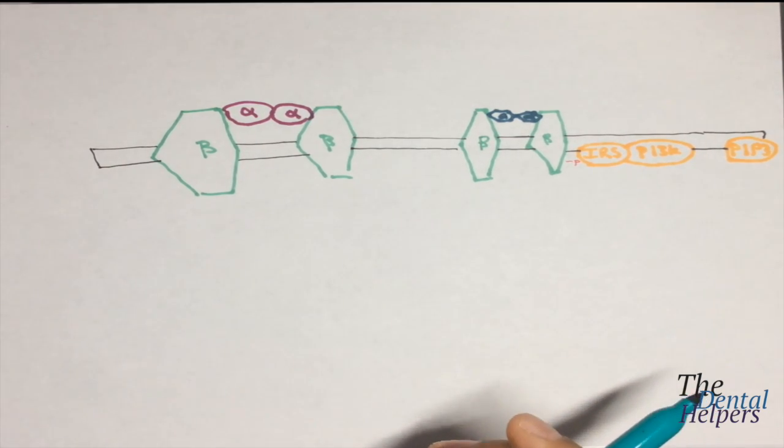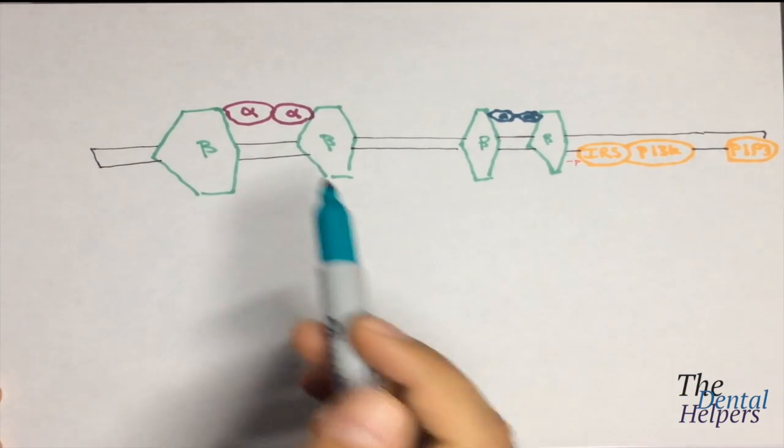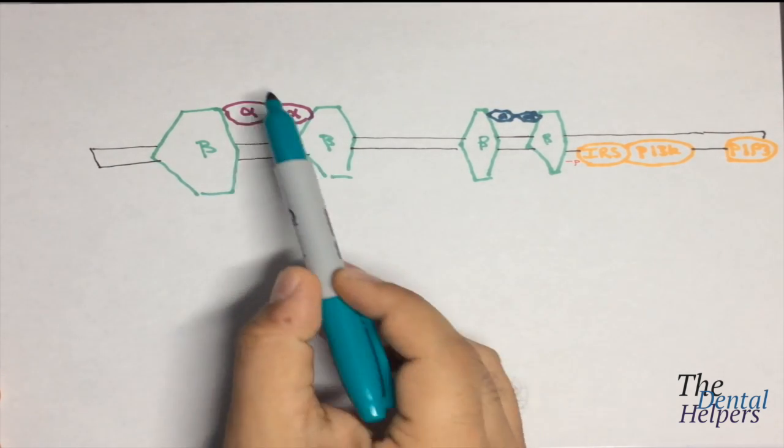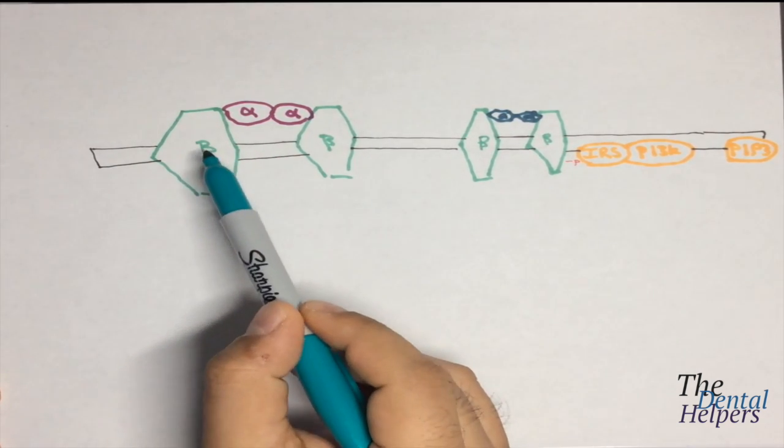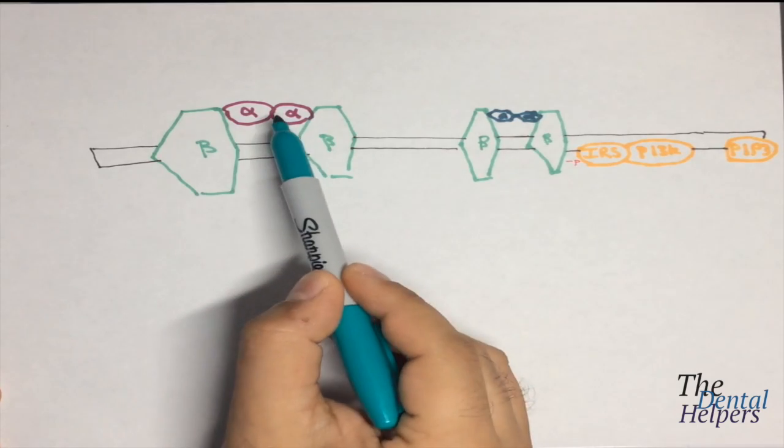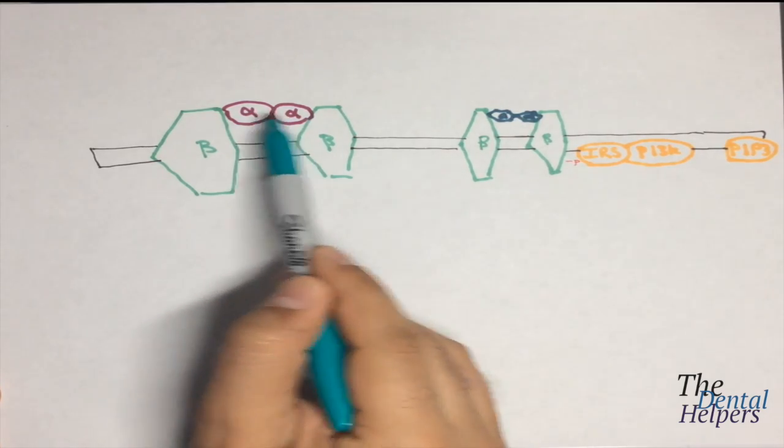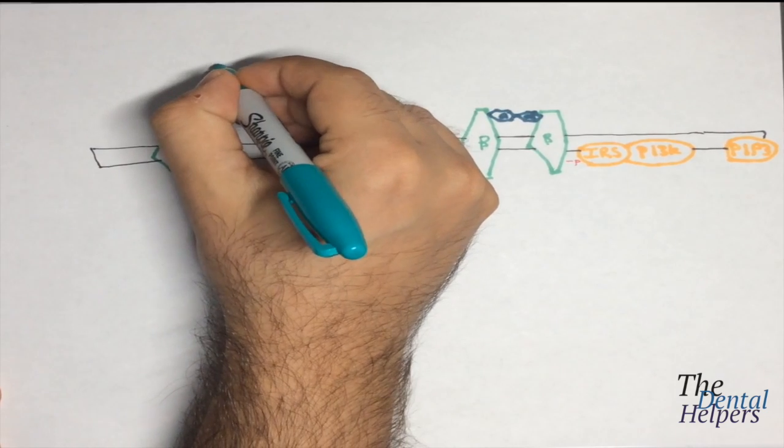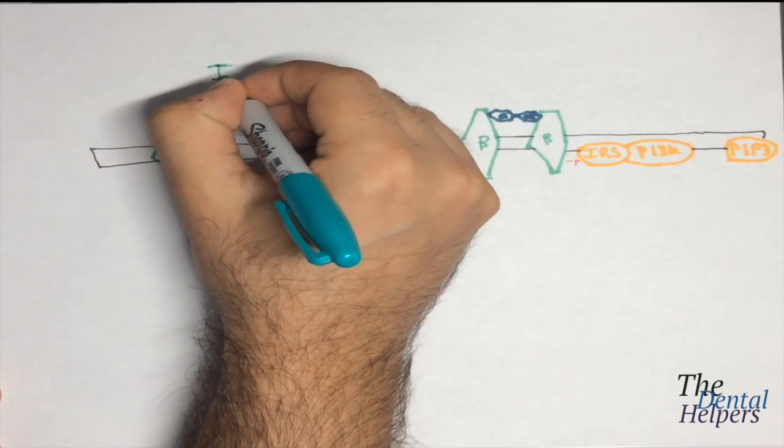So what I've drawn right here is an insulin receptor, and the components of an insulin receptor are two beta subunits that are going to go transmembrane, and then there are two alpha subunits that remain on the extracellular surface. And the state that is drawn on the left here is the inactive form.